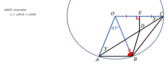Next, notice that the angle at the top — that Y at the top — and the angle CAB are congruent to each other, because they are alternate interior angles for the parallel lines OC and AB.